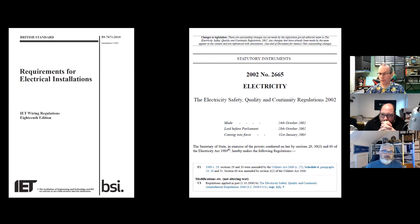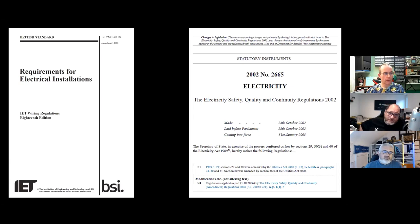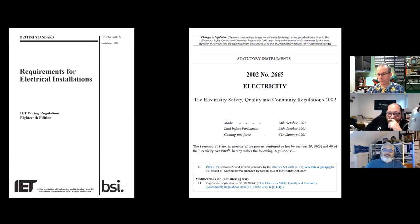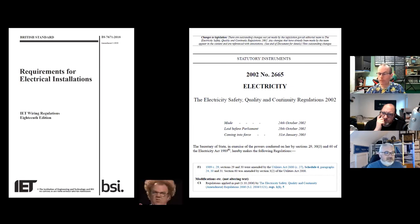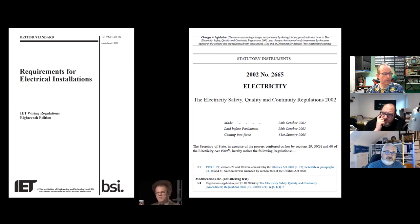There are also the Electrical Safety Quality and Continuity Regulations 2002 — ESQCR — amended in 2005 and 2009. This is freely available online. This is the highest piece of legislation for DNOs in the land, and all it does is confuse people because regulation 110 says everything under there is exempt. I'd argue that approach is going to have to change.